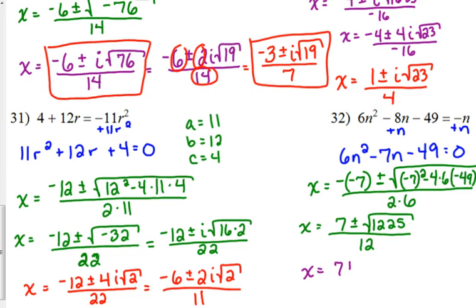So x is equal to 7 plus or minus 35 over 12. You need to split that up. 7 plus 35 is 42. 42 over 12. Let's see here, divisible by 6. Both of them. So 7 over 2. And 7 minus 35 is negative 28. Negative 28 over 12. So you're both divisible by 4. So that's negative 7 over 3.